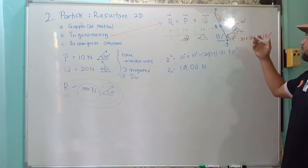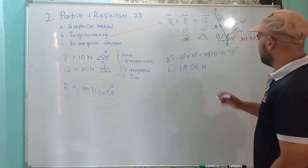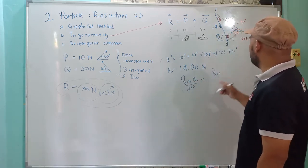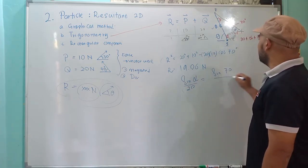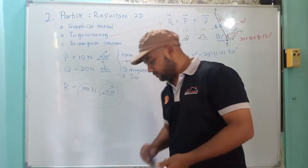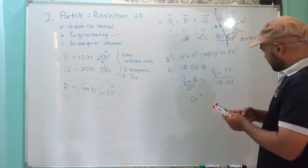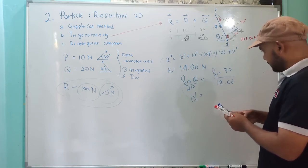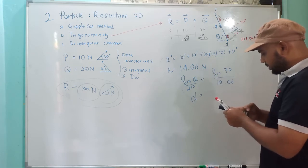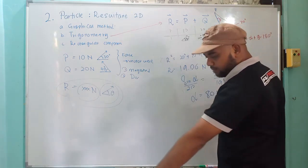So you can use the cosine rule, or you can use the sine rule. Let's use the sine rule: sine alpha divided by 20 equals sine 70 divided by R, which is 19.06. So calculate: sine 70 divided by 19.06 times 20 gives sine alpha, then alpha equals sine inverse of that answer. Alpha is 80.4 degrees.